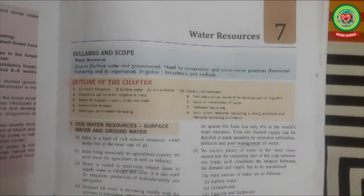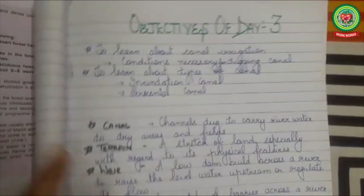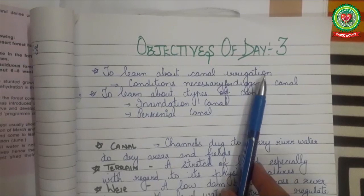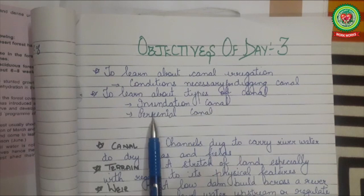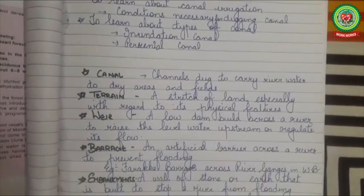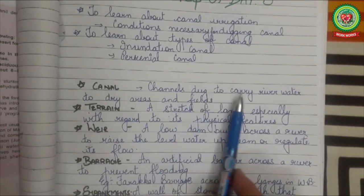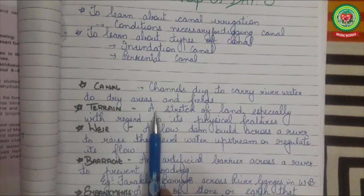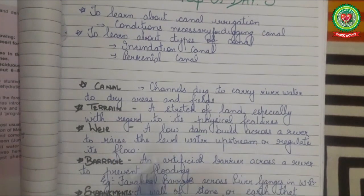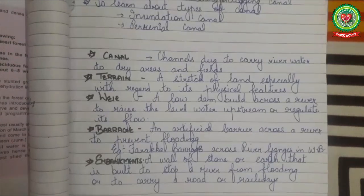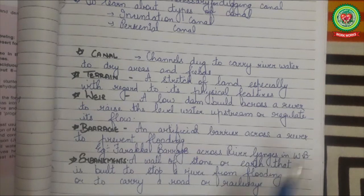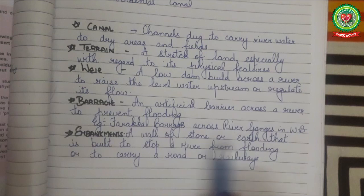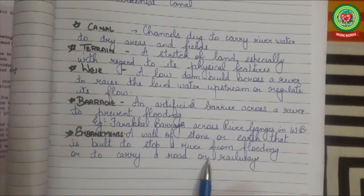Today we will be learning in detail about one of the primitive methods — canal irrigation — including the conditions necessary for digging a canal and types of canals: inundation canal and perennial canal. We will also learn new vocabulary: canal means a channel dug to carry river water to dry areas and fields; terrain means a stretch of land with regard to its physical features; weir means a low dam built across a river to raise the water level; barrage means an artificial barrier across a river to prevent flooding, for example Farakka Barrage across the River Ganga in West Bengal; embankment means a wall of stone or earth built to stop a river from flooding or to carry a road or railway.